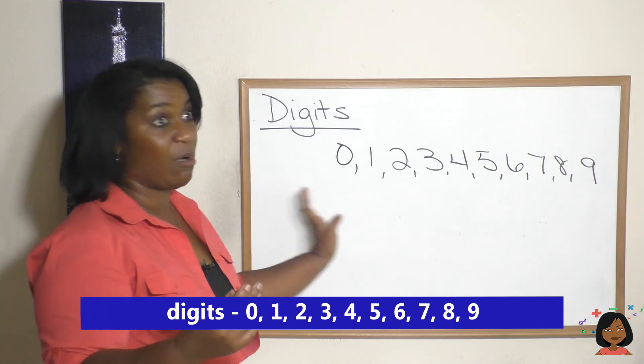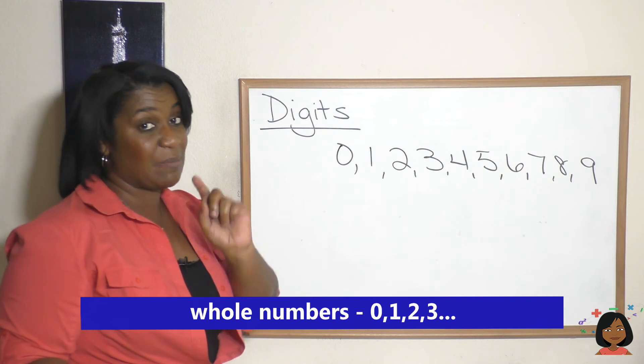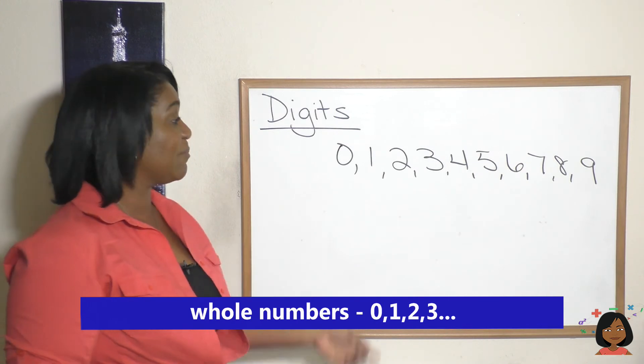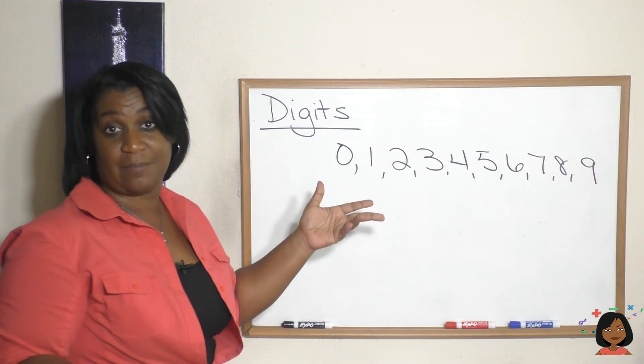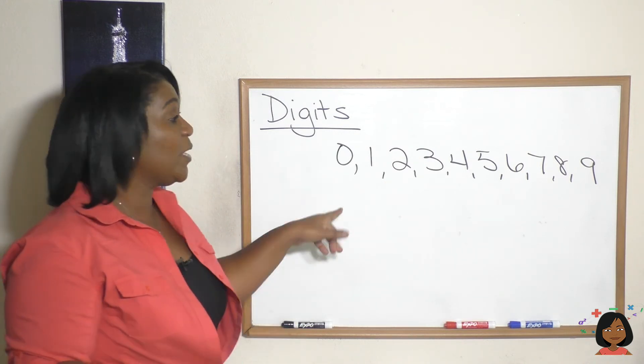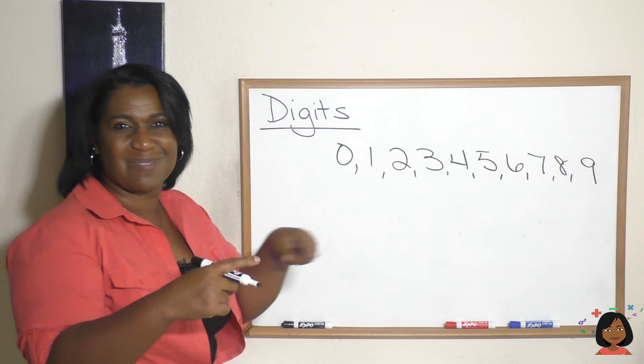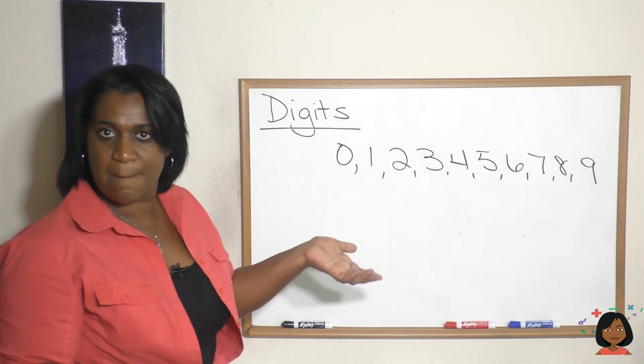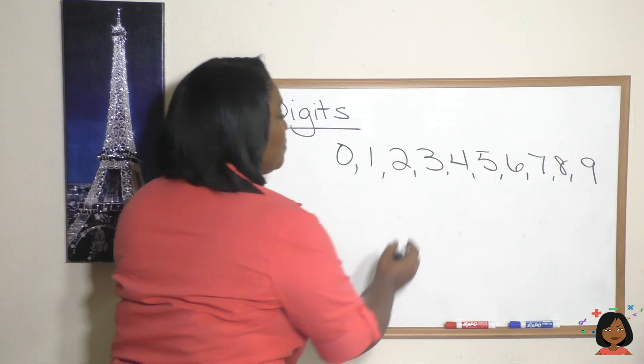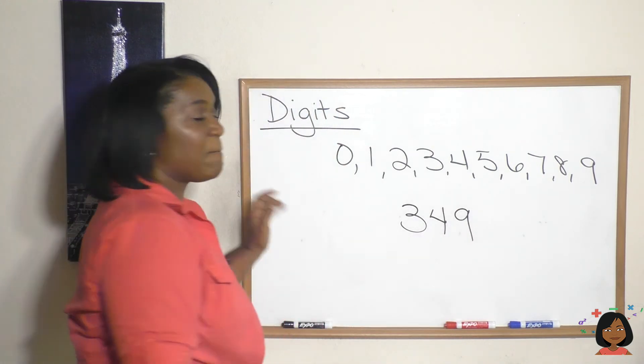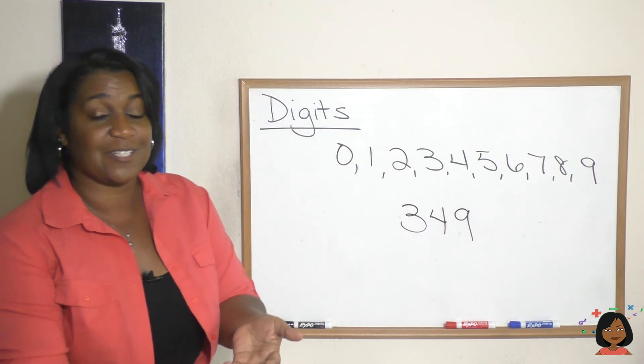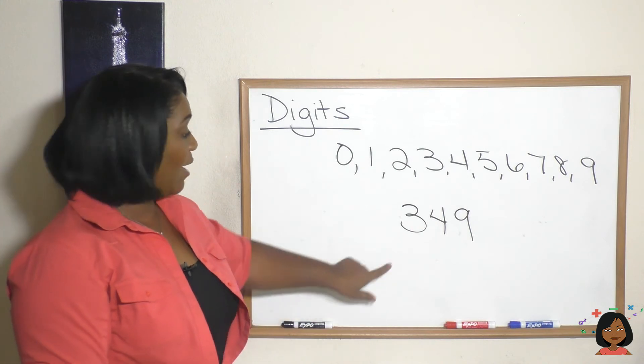But when I'm talking about digits I'm just talking about these ten numbers here: zero up to nine. Now the cool part about these is that we can use these, rearrange them in different orders to make numbers. Okay, take a look. So I'm gonna do this number 349. My first question for you is how many digits do I have in my number?